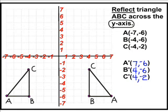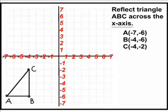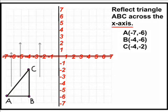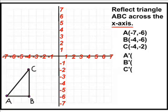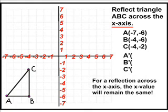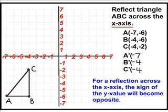Now let's use this same rule to reflect triangle ABC across the x-axis. The same rule will apply, except when reflecting something across the x-axis, it's the x values which will remain the same, and it is the y values that we will have to change the sign to the opposite of what it was.